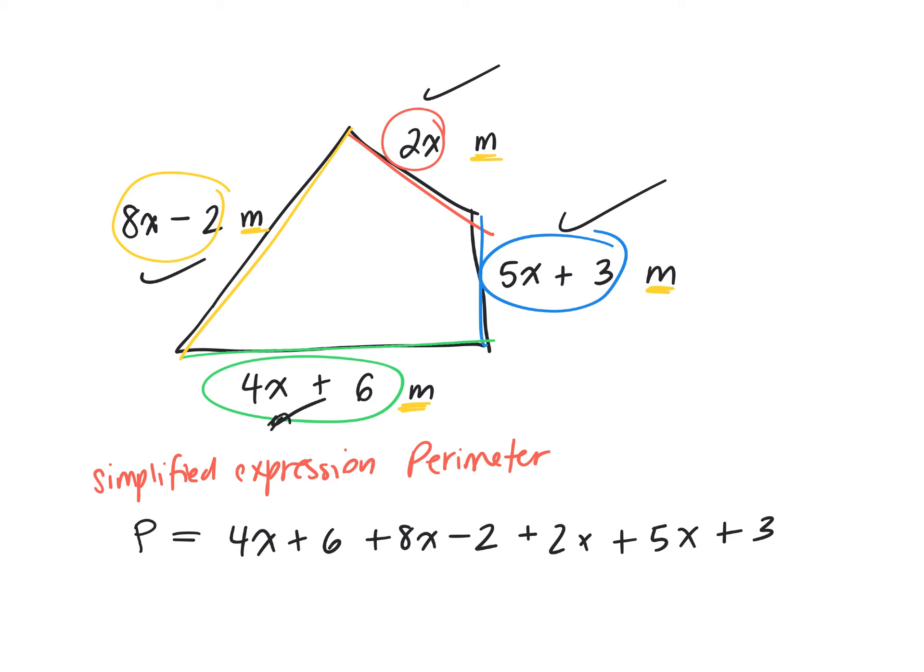You're adding up all the sides, now what? I want a simplified expression, what do I have to do now? Add all the x's. Add all the x's, put all your like terms together. You could do this in your head. I need to put all my like terms together. So I have a 4x, plus what? 8x. Yep. 5x. 2x.